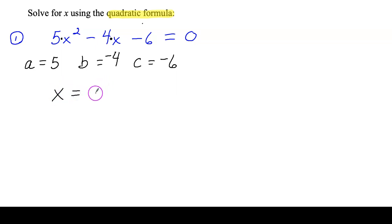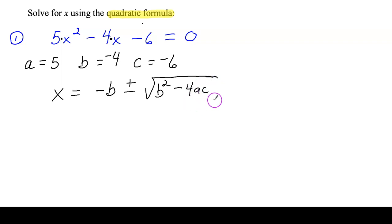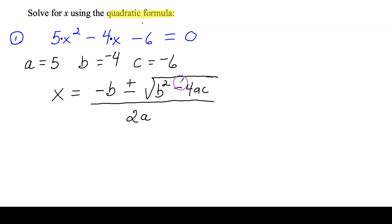This is the quadratic formula: x equals negative b, plus or minus the square root of b squared minus 4 times a times c, all divided by 2 times a. You do not need to memorize this formula — it is on the GED formula sheet. You can plug the values in by hand, but I'm going to show you how to use the GED calculator to make this whole process much easier.